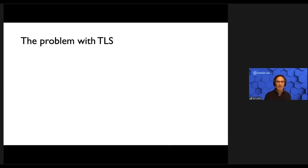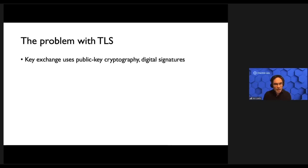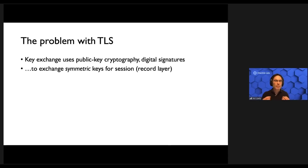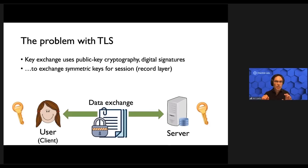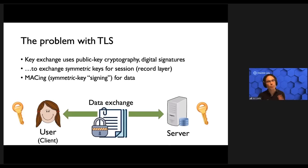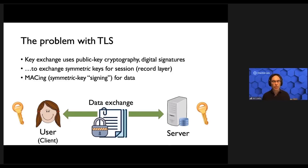But there's a problem with TLS. It does indeed use public key cryptography and digital signatures to perform key exchange, but this is to exchange symmetric keys for the session — for what's called the record layer. In other words, when data is exchanged between Alice and the server, it's secured using a key that the two of them share. They're using what's called a MAC, or message authentication code, rather than a true signature. Consequently, Alice is just as capable of signing data as the bank is. There's no digital signature on data that can be shown to a third party to provide trustworthy proof about the data provided by the server.